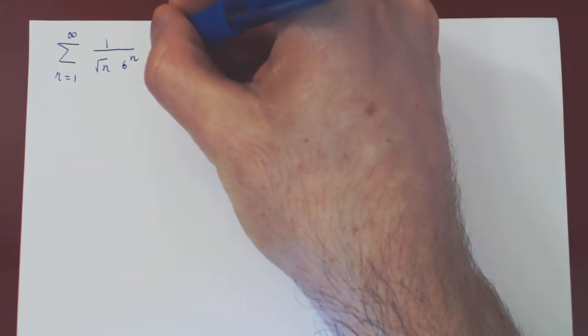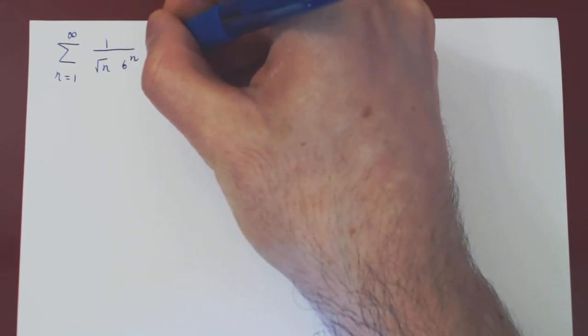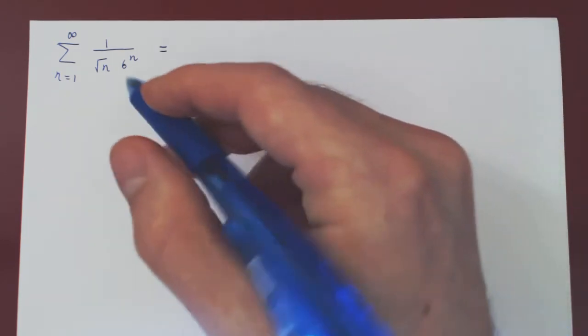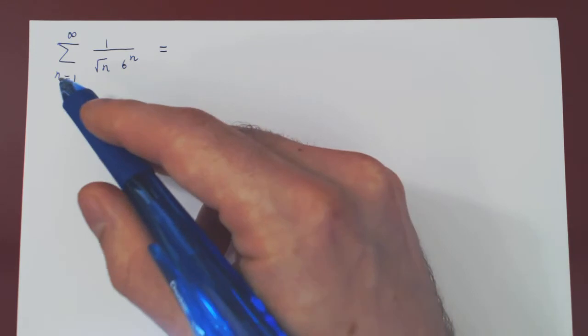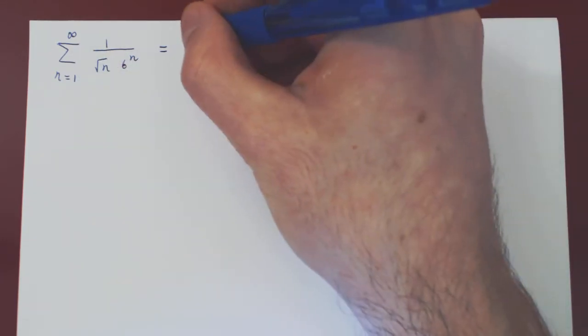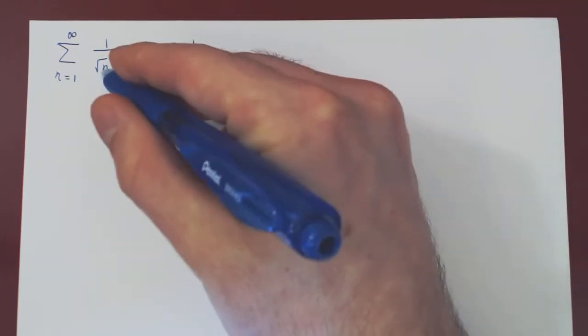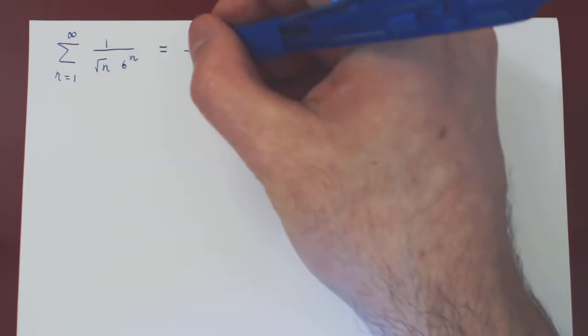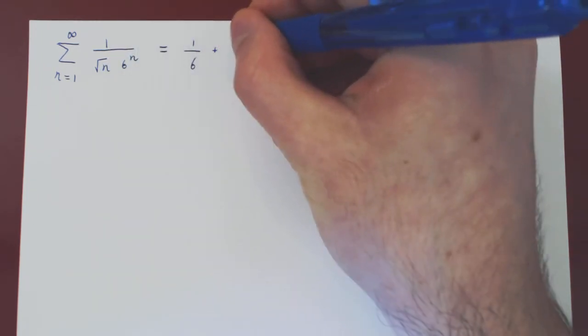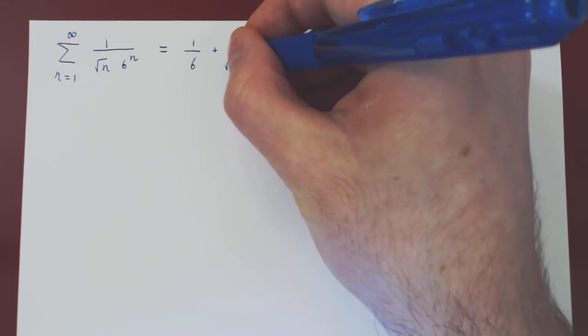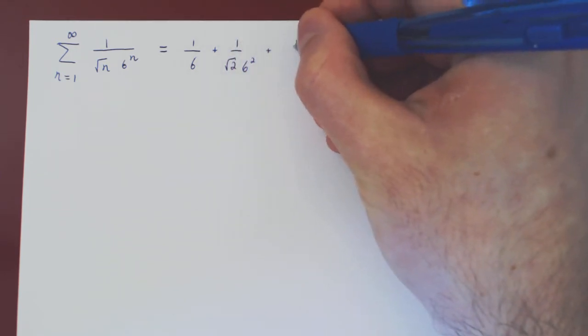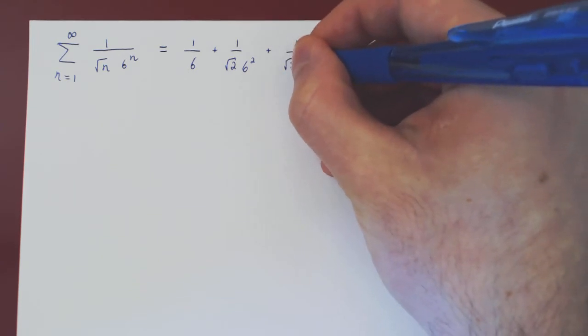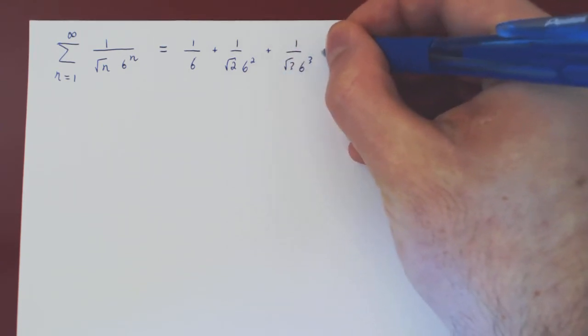Let's get a better feeling for what we're summing by writing out the first few terms of our series. So we're summing 1 over root of n times 6 to the n, as n goes from 1 to infinity. So we have 1 over root of 1 is 1 times 6 to the 1, so 1 over 6, plus when n is 2, root of 2 times 6 squared, plus 1 over when n is 3, root of 3 times 6 cubed, and so on.